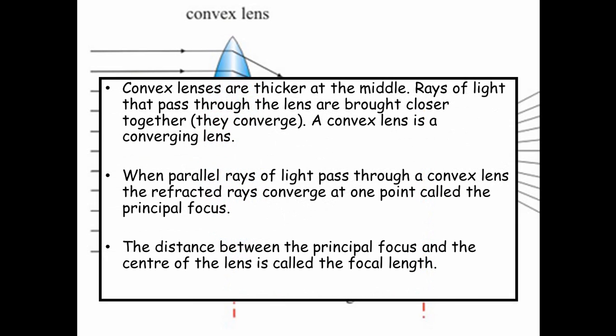So convex lenses are thicker in the middle, rays of light that pass through the lenses are brought closer together, they converge. A convex lens is a converging lens.